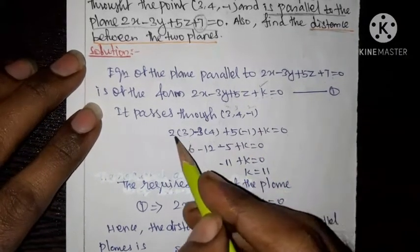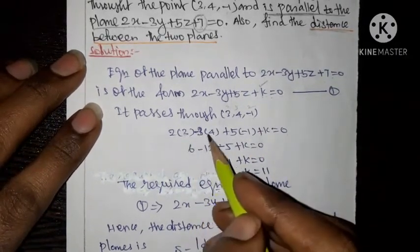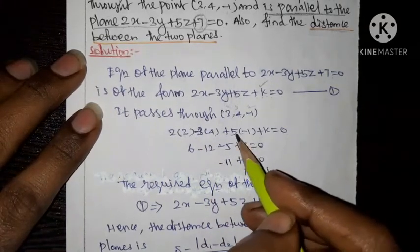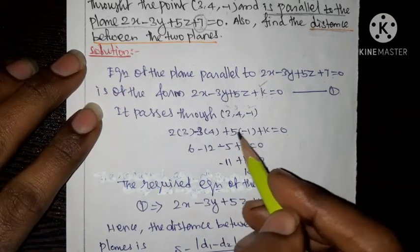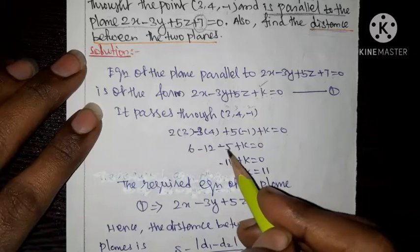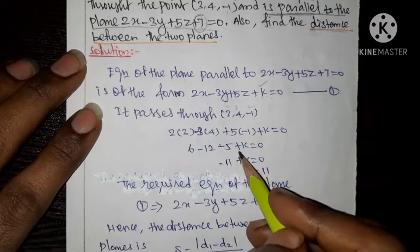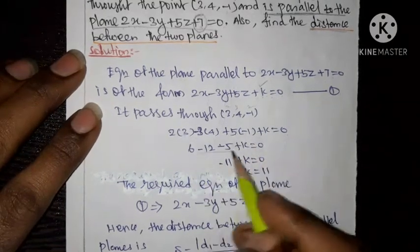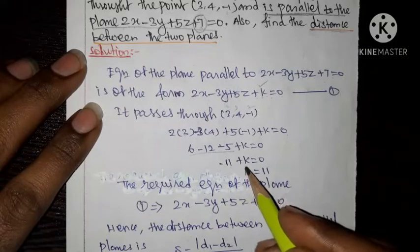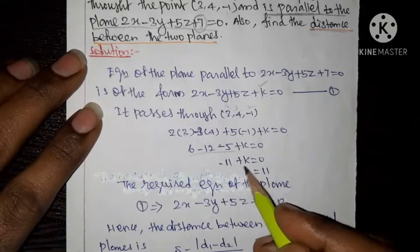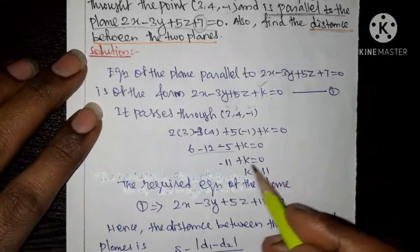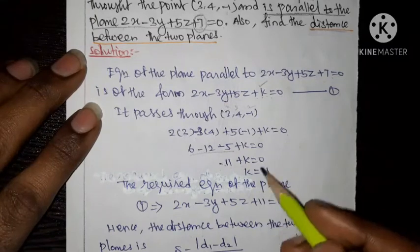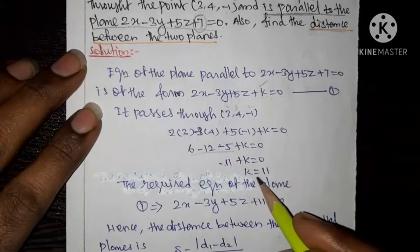Substituting: 2 times 3 is 6, minus 3 times 4 is minus 12, plus 5 times minus 1 is minus 5, plus k equal to 0. So 6 minus 12 minus 5 plus k equal to 0, which gives minus 11 plus k equal to 0, therefore k equal to 11.